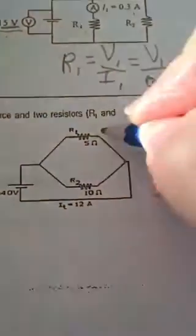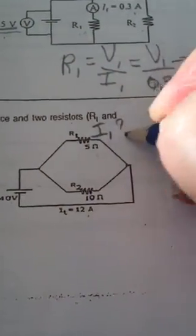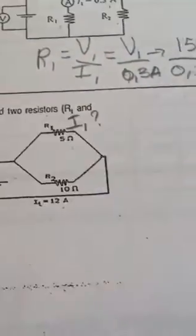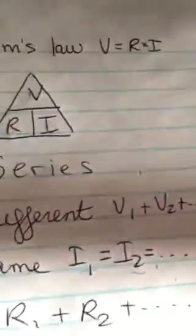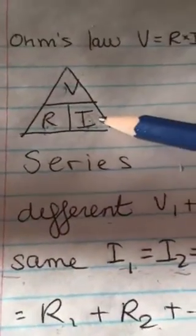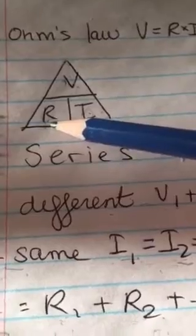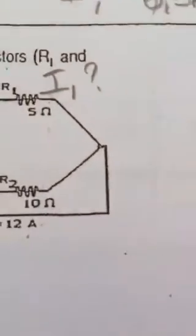We're looking for I1. According to Ohm's law, to find current you do V divided by R. So we'll write I1 equals V1 divided by R1.